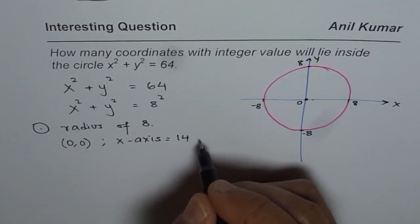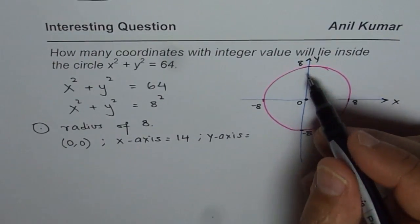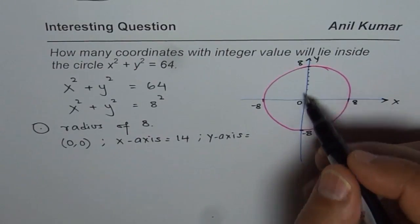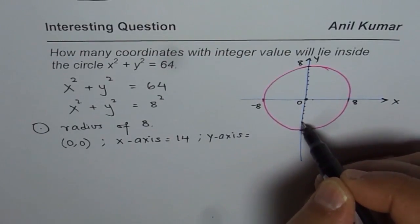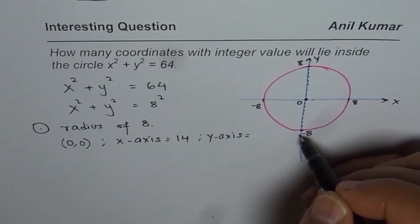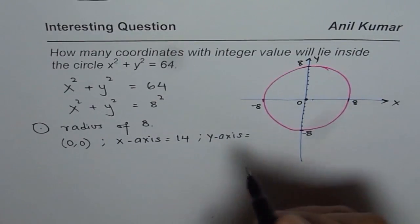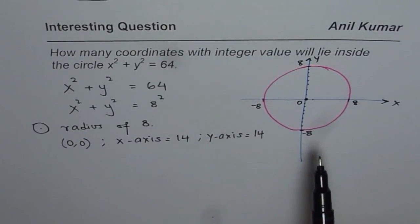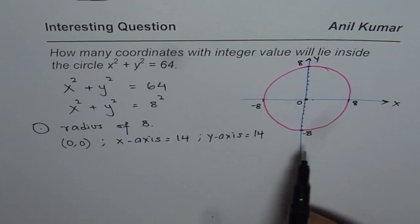On the y-axis, we again have 14 points: (0,1), (0,2), (0,3), up to (0,7), and similarly 7 on the negative side. So on the coordinate axes total we have 14 plus 14 = 28, plus 1 for the origin, giving 29 points on the coordinate axes. But there will be many more points inside, like (1,1).